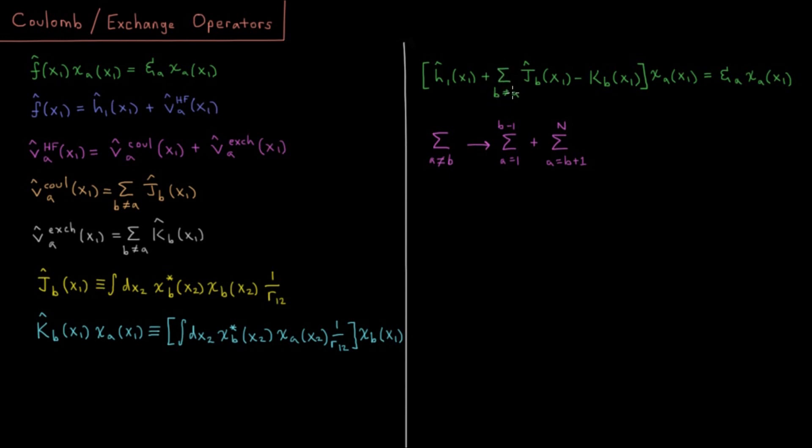Of the Coulomb operator minus the exchange operator acting on electron one in spin orbital chi A. And that all gives us the orbital energy of spin orbital A times the same spin orbital left over.